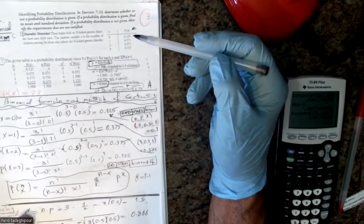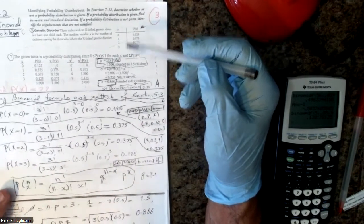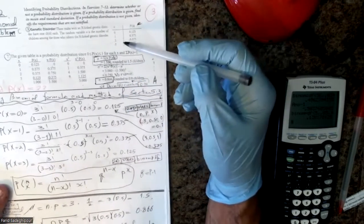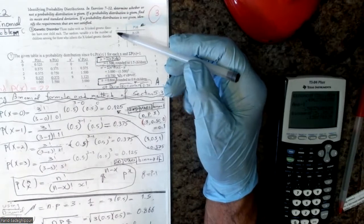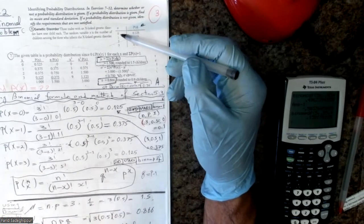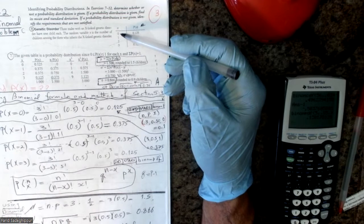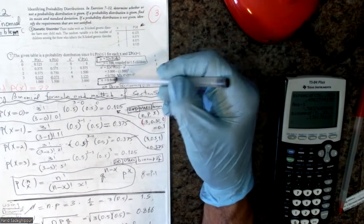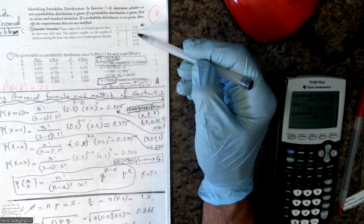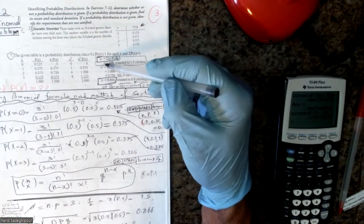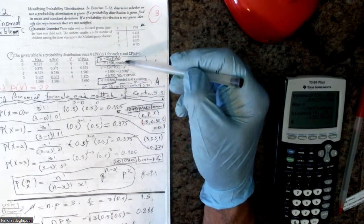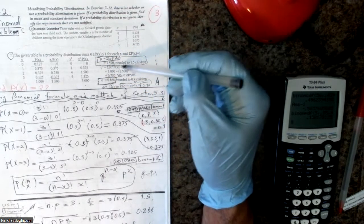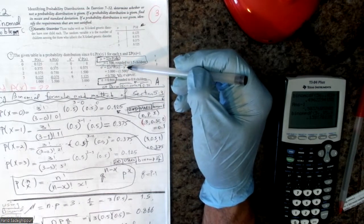We had a problem where two columns are given in a probability distribution — the first column is x. This is the case of a couple who wants to have three children. What is the probability of having zero girls, one girl, two girls, or three girls? To calculate the mean and standard deviation for any probability distribution, we use the formula: mean equals sum of x·p(x), and standard deviation equals the square root of sum of [x·p(x) minus mean squared].